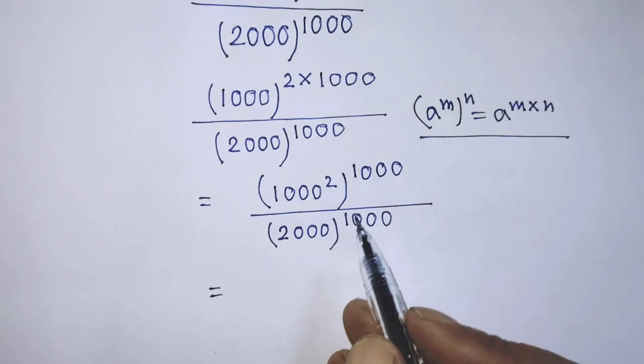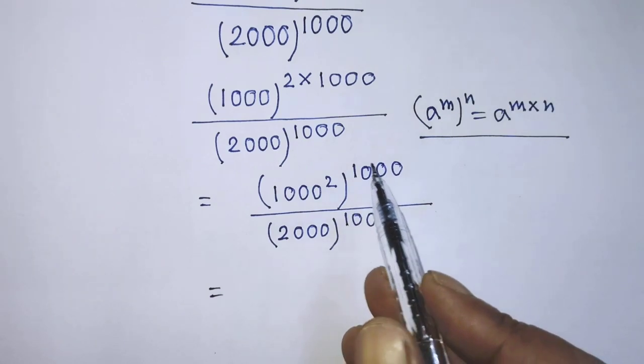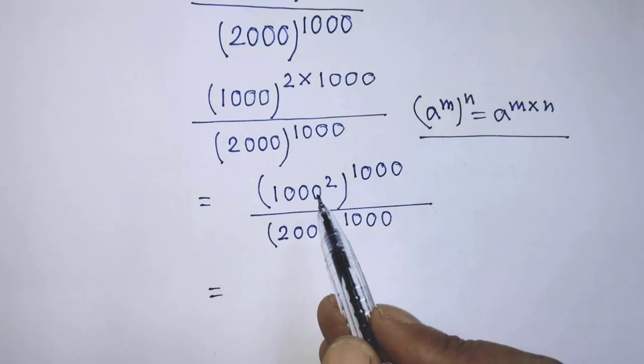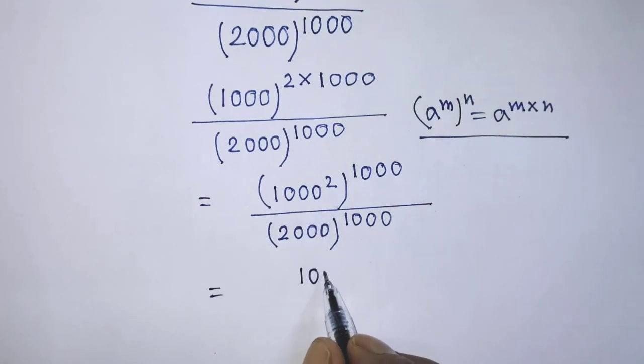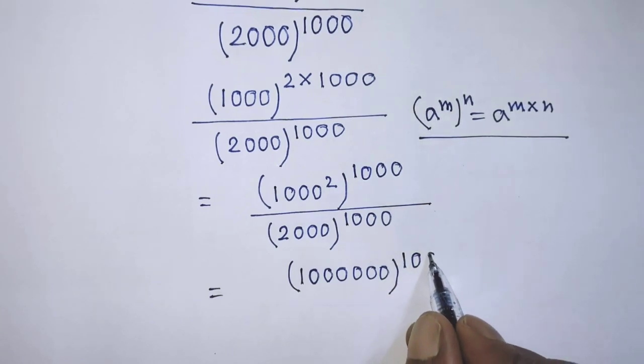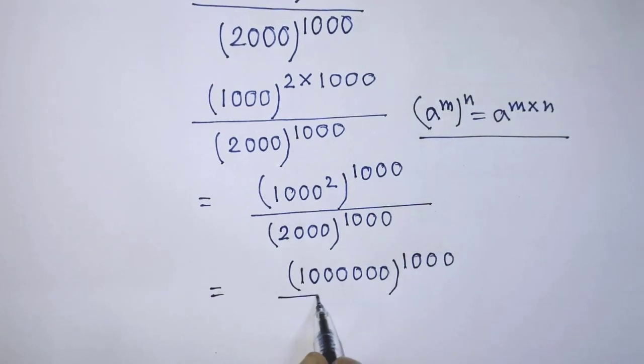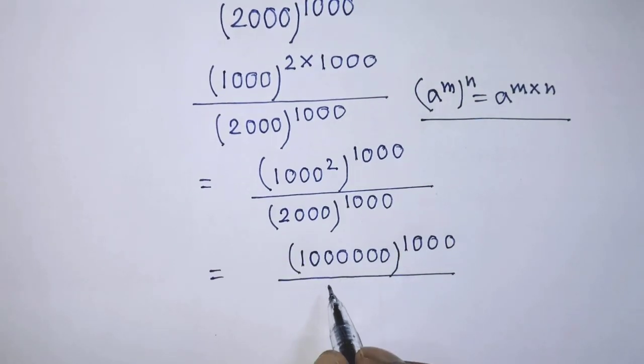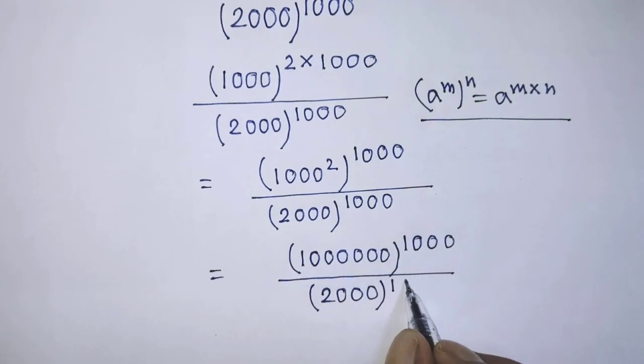In the place of numerator, in this exponential form, in the place of base, it will be 10 lakh whole to the power 1000 over, in the place of denominator, again you have to write 2000 whole to the power 1000.